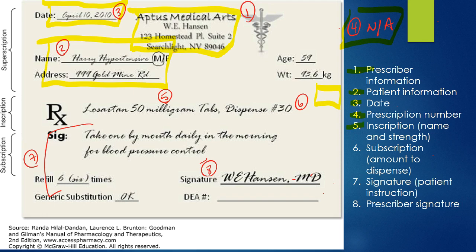Number five is the inscription — it's the name and strength. You can see that what the doctor has prescribed is Losartan 50 milligrams tablets. So you have the strength and the name of the medication.